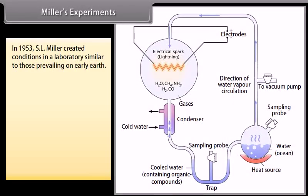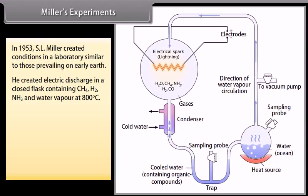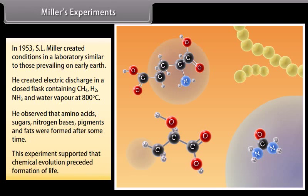Miller's Experiment: In 1953, S.L. Miller created conditions in a laboratory similar to those prevailing on early Earth. He created electric discharge in a closed flask containing CH4, H2, NH3 and water vapor at 800 degrees Celsius. He observed that amino acids, sugars, nitrogen bases, pigments and fats were formed after some time. This experiment supported the idea that chemical evolution preceded the formation of life.